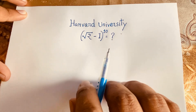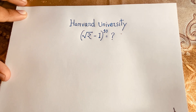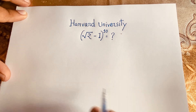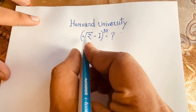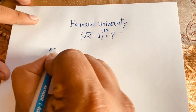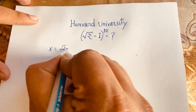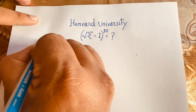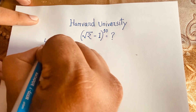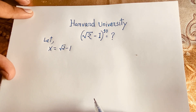10 is a big number, so how do we solve this exponential math question? First of all, we have to take x equal to square root 2 minus 1. Let x = √2 - 1.